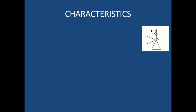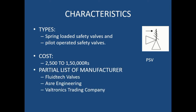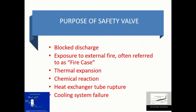Now we will see the characteristics of the safety valve. This is the flow sheet symbol for the pressure safety valve — we abbreviate it as PSV, that is a pressure safety valve. The types are: spring loaded safety valve and pilot operated safety valve. The cost ranges from two thousand five hundred to almost one lakh fifty thousand rupees. The price is on the higher side because a safety device plays a vital role in the safety of the complete plant. Manufacturers include Fluid Controls, Voltronic, and others.